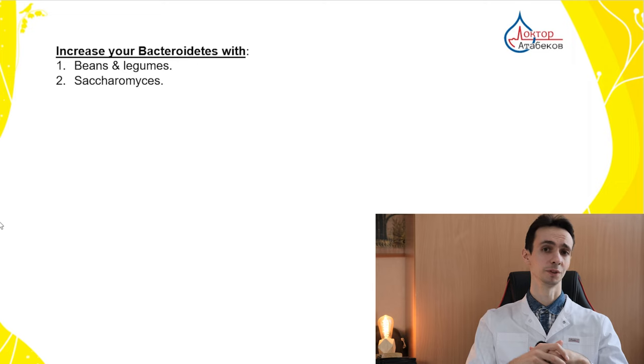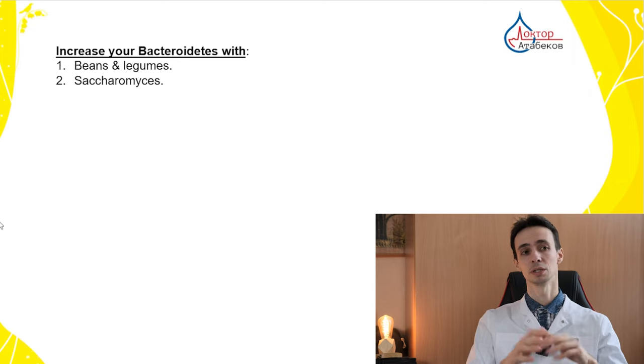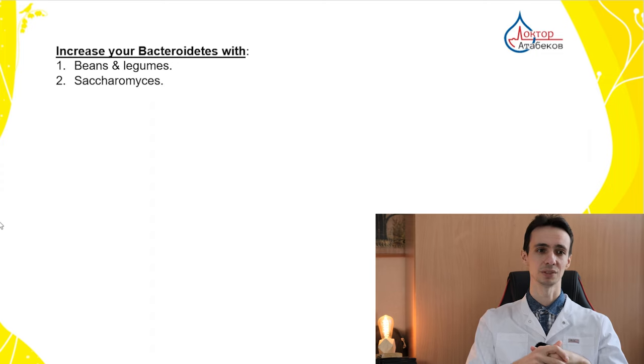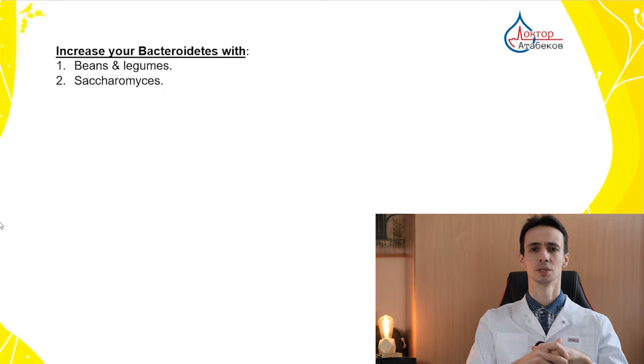If you don't want to take probiotics, you can also influence your bacteria with different food. To decrease Firmicutes and increase Bacteroidetes, you can consume beans and legumes, or you can also take Saccharomyces to improve this balance.